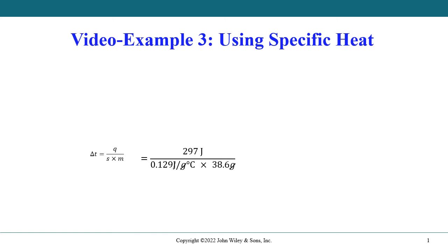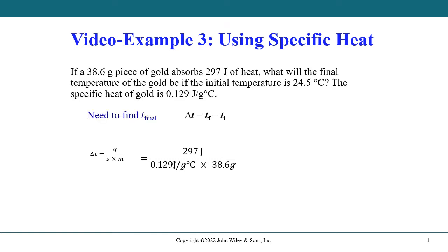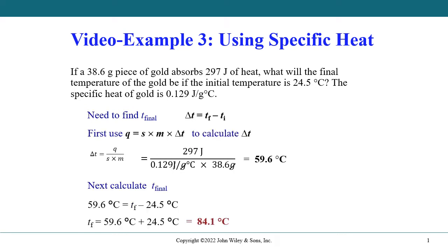Welcome to Chemistry 1B's third video example. In this case we have an application of using specific heat. The specific problem says we have a 38.6 gram piece of gold that absorbs 297 joules of heat. What is the final temperature of the gold if the initial temperature is 24.5°C and the specific heat capacity of gold is given as 0.129 joules per gram degree C?